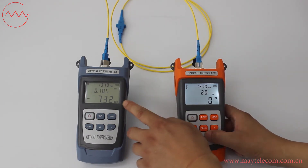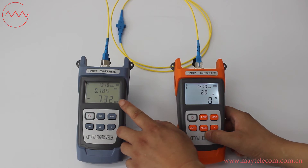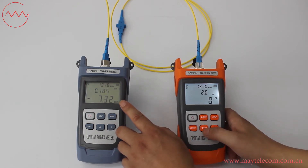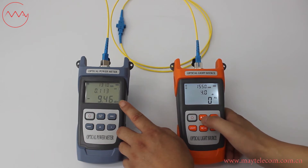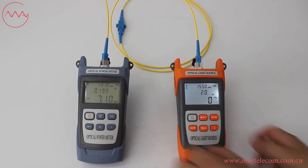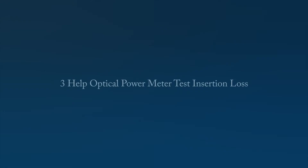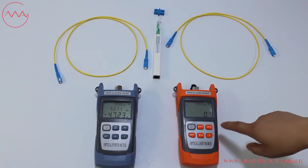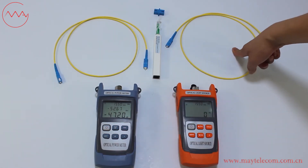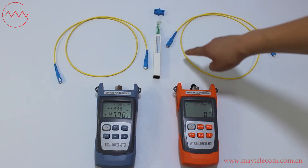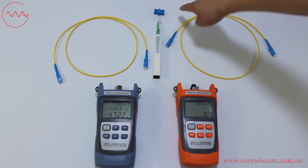We can see the change of receiving power when we press the up button. The equipment used includes: the optical light source, optical power meter, reference patch cord, patch cord under test, one-click cleaner, and SC adapter.